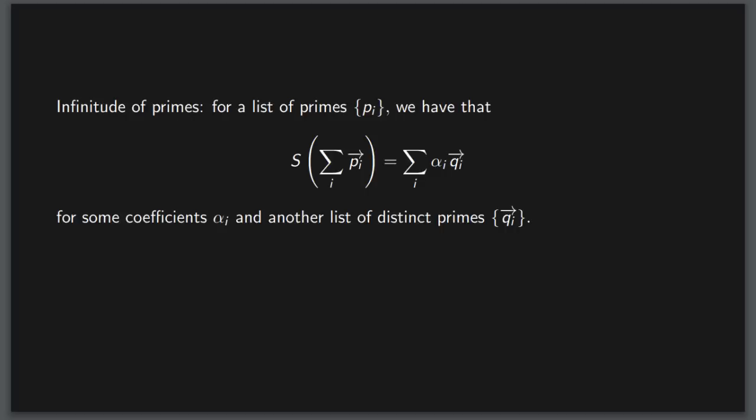In that, we sum up the vectors of a list of prime numbers, apply the successor, and get a weighted sum of different prime numbers out of this operation. A number of interesting problems can be expressed in this notation, such as the twin prime conjecture, which states that there are an infinite number of primes whose difference between them is 2.